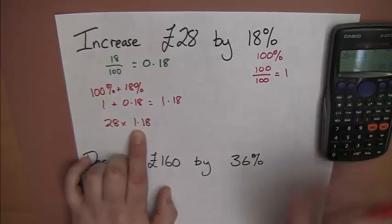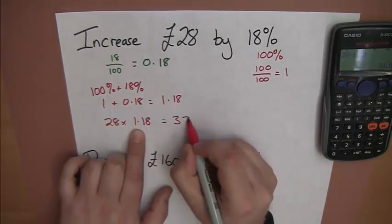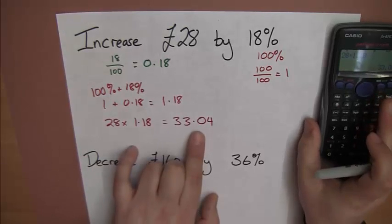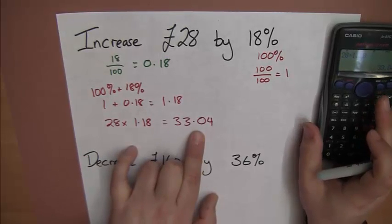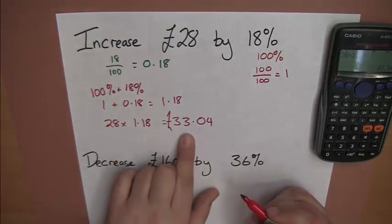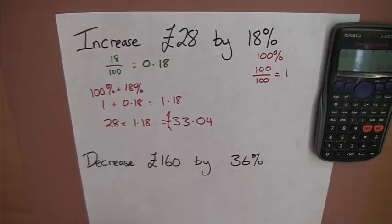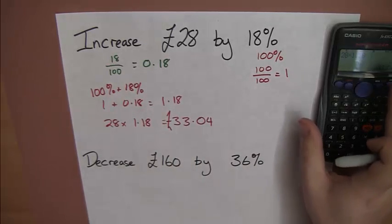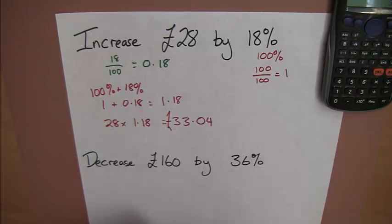Press the SD button to get that as a nice decimal. That gets us 33.04. So, that is 28 pounds. Let's put the pound sign on. 28 pounds increased by 18%, 33 pounds and 4 pence. Let's just recap the steps there, because that was quite quick, and I just want to make sure you get this.